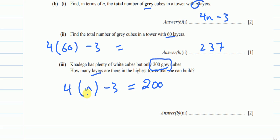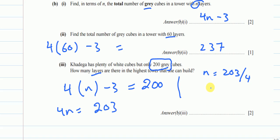Solving 4n − 3 = 200: bring −3 to the right to get 4n = 203, so n = 203 ÷ 4 = 50.75. Since we cannot build a fractional layer, and we don't have enough gray cubes for a 51st layer, the answer is 50 layers.